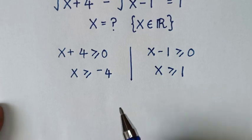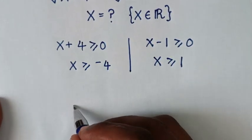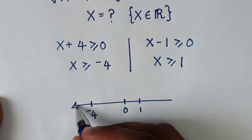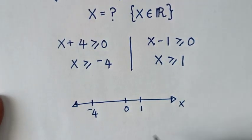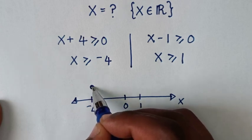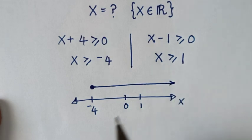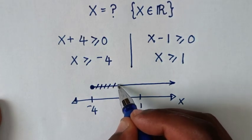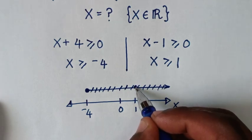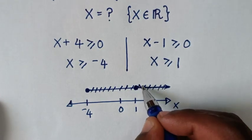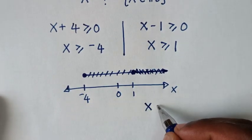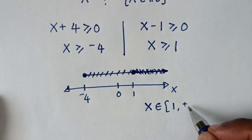Let's draw these on the number line. We have negative 4 and 1. On the number line, x greater than or equal to negative 4 goes from negative 4 in this direction, and x greater than or equal to 1 goes from 1 in this direction. The intersection is from 1 to infinity. Therefore, the value of x is an element of the interval from 1 to positive infinity.